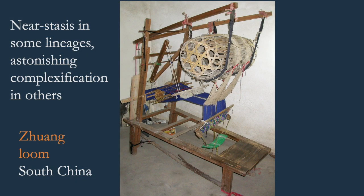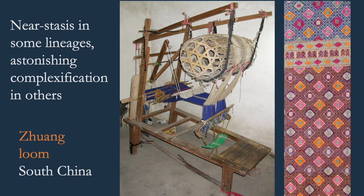So, we have near stasis in some lineages, compared with astonishing developments in others. This loom, used by Zhuang people in South China, is an example of one of the more complex types. Patterns are recorded permanently on a set of bamboo rods around the drum in the centre, which rotates as the patterns are transferred to the cloth. The loom is used for weaving decorated bed covers, such as this one. Generally, these complex looms seem to appear in societies living in relatively prosperous circumstances. The simpler looms are concentrated in smaller scale societies, particularly those living in remote and resource-poor locations.